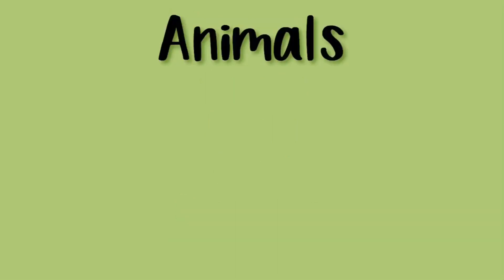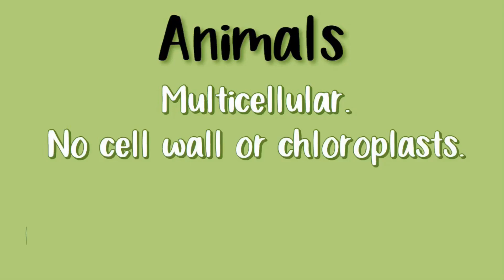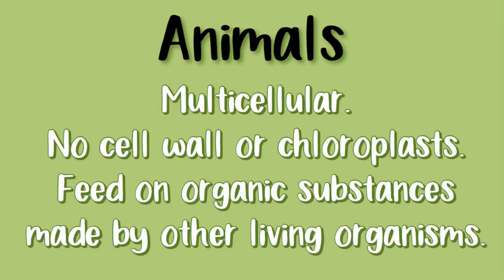Animals are multicellular, meaning they have a bunch of different cells in their body. They do not have a cell wall or chloroplasts. They feed on organic substances made by other living organisms.